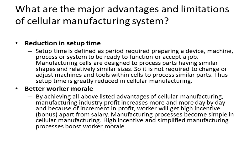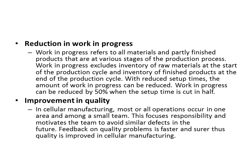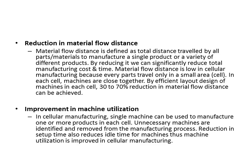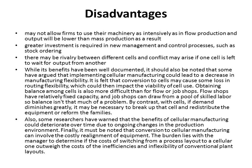What are the major advantages and limitations of cellular manufacturing system? The advantages include: reduction of setup time, improvement in worker's morale, reduction in work in progress, improvement in quality, reduction in material handling cost and time, reduction in production lead time, reduction in material flow distance, and improvement in machine utilization.